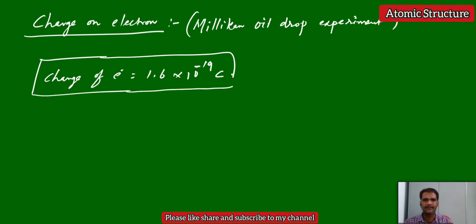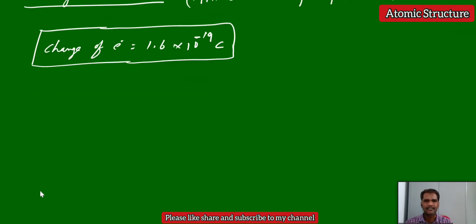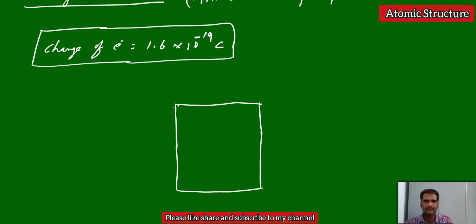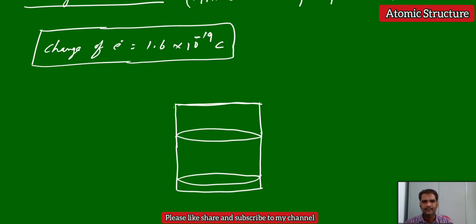We will see what the Millikan oil drop experiment is. The experimental setup contains one cylindrical chamber. This chamber consists of two electrical plates, and these two electrical plates are connected externally to a high voltage battery. This is the positive and this is the negative electrode — positive plate and negative plate. The positive plate is made with a small hole.